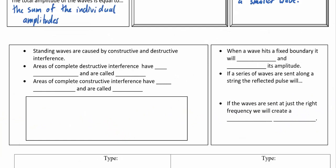Standing waves are caused by constructive and destructive interference. Areas of complete destructive interference have no amplitude and are called nodes. Whereas areas of complete constructive interference have a large amplitude and they are called antinodes.